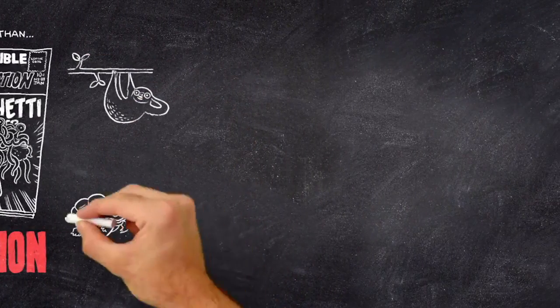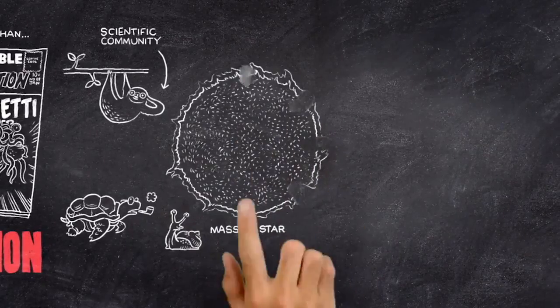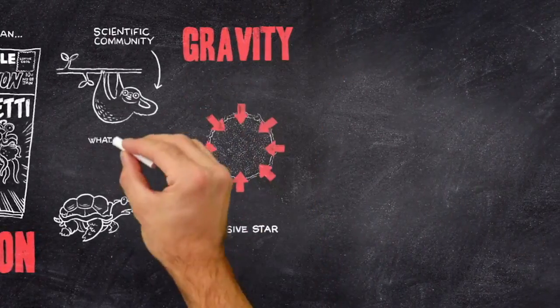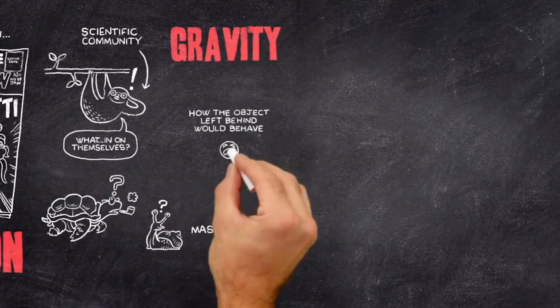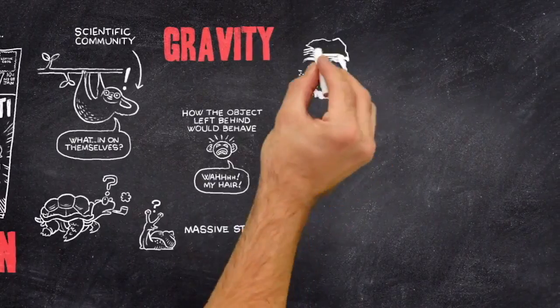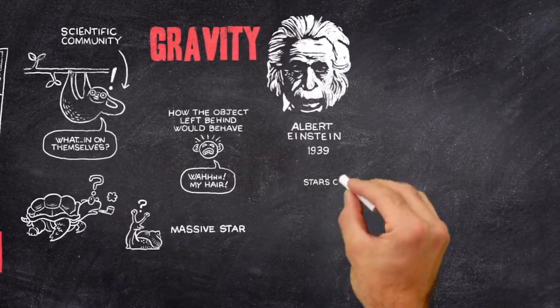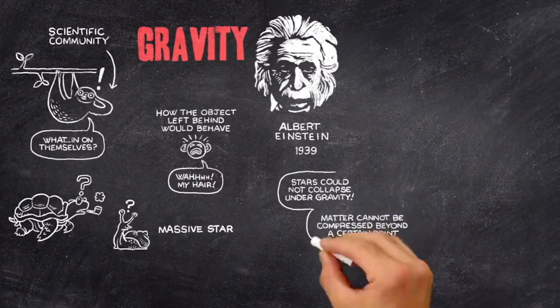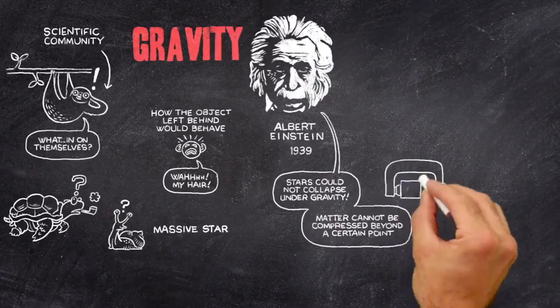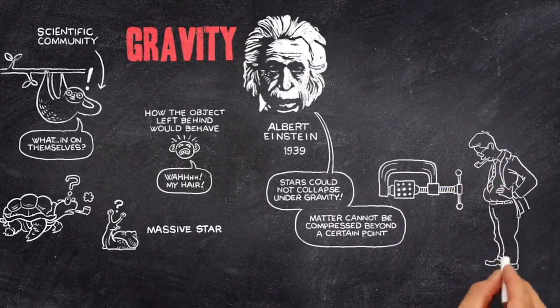The scientific community was slow to realize that massive stars could collapse in on themselves, under their own gravity, and how the object left behind would behave. Albert Einstein even wrote a paper in 1939, claiming stars could not collapse under gravity, because matter could not be compressed beyond a certain point. Many scientists shared Einstein's gut feeling.